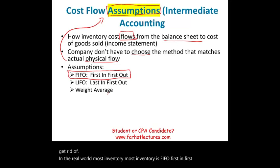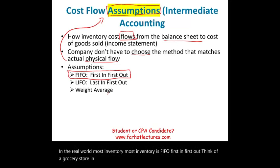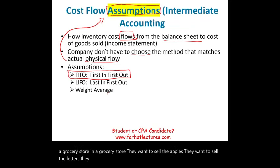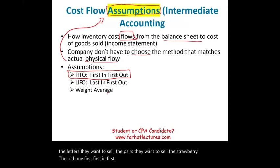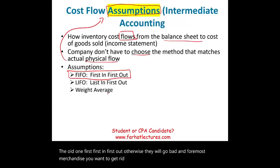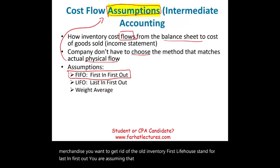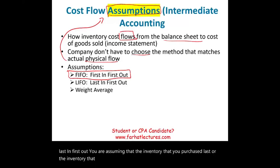Think of a grocery store — they want to sell the apples, lettuce, pears, and strawberries, the old ones first, first in first out. Otherwise they will go bad. For most merchandise, you want to get rid of old inventory first. LIFO assumes the inventory purchased last is sold first. Again, those are assumptions.